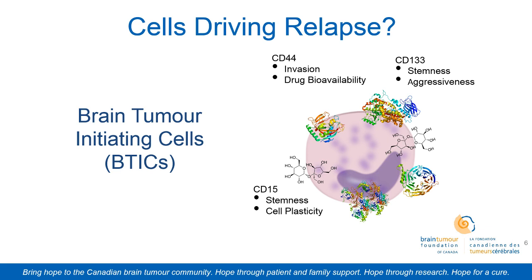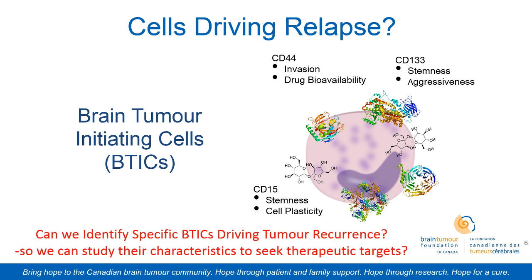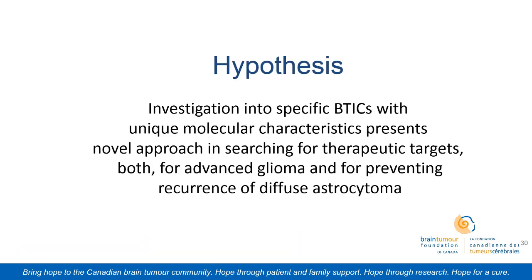Furthermore, from other past literature, we also see that when you extract the BTICs from high-grade gliomas and from low-grade gliomas, the BTIC populations both show identical stem cell-like characteristics. This arises different questions: Can we identify the specific BTICs that are driving this tumor relapse? And if we identify them, can we seek therapeutic targets based on their specific characteristics? These questions lead us to our hypothesis: that investigation into these specific BTICs with unique molecular characteristics presents a novel approach in searching for therapeutic targets, both in advanced glioma and for preventing the recurrence of diffuse astrocytomas.